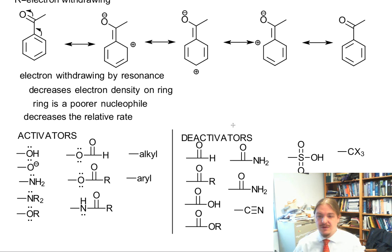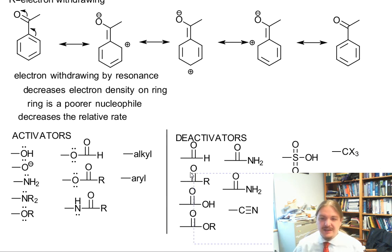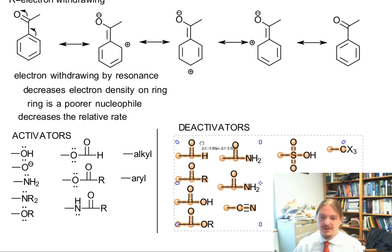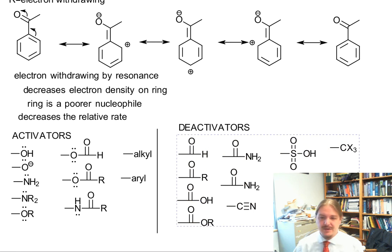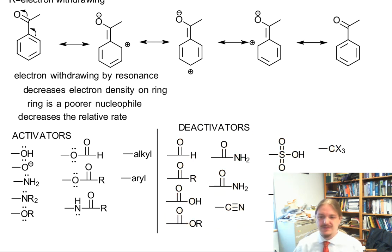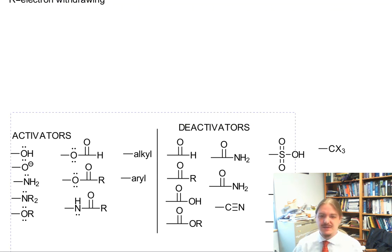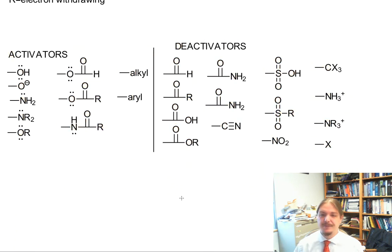There is one other group in the deactivator category that needs to be mentioned: the halogen atoms themselves are electron withdrawing by resonance, so they go in the deactivator category. I'll move those items so they're visible on screen.